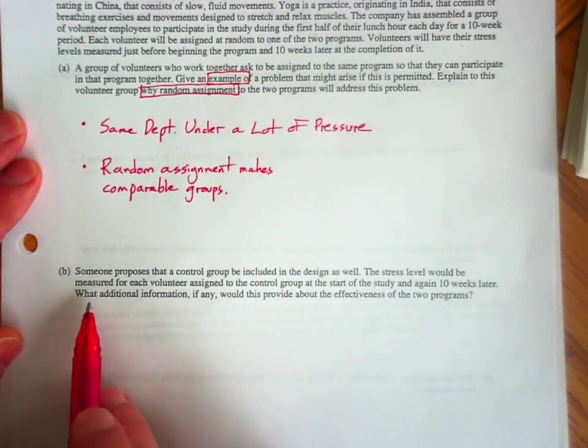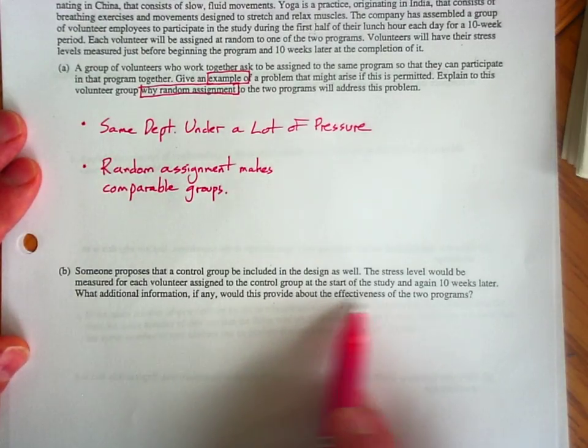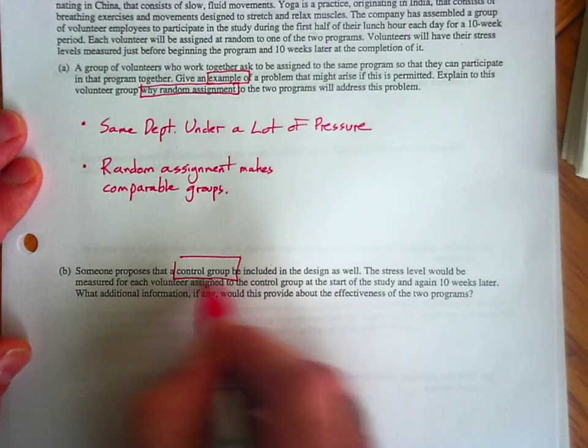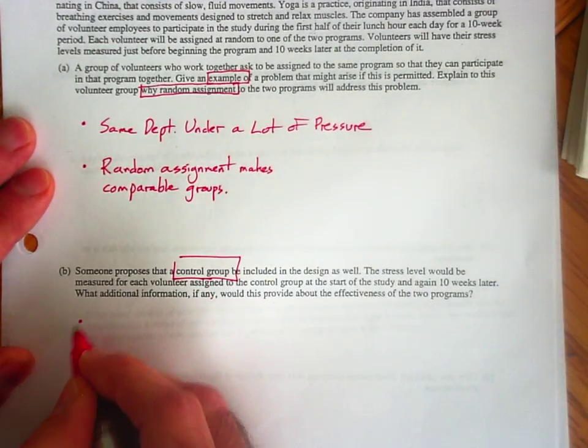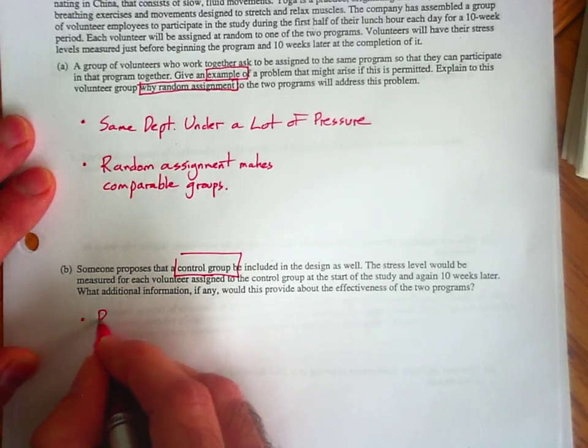So what additional information, if any, would a control group provide about the effectiveness of the two programs? The most important thing to describe here is that the control group gives you a basis for comparison.